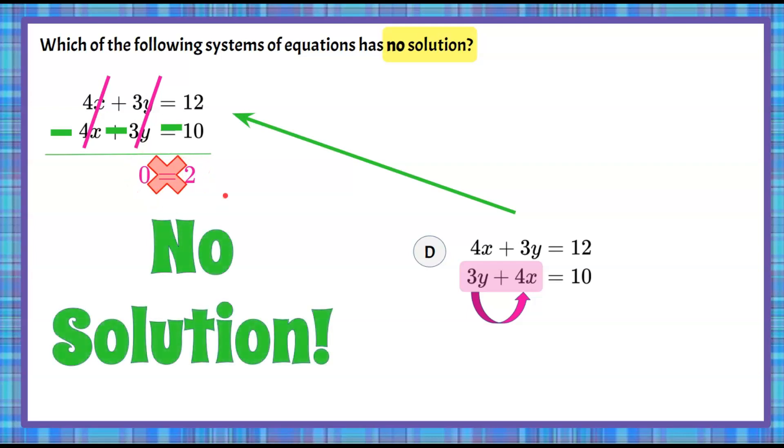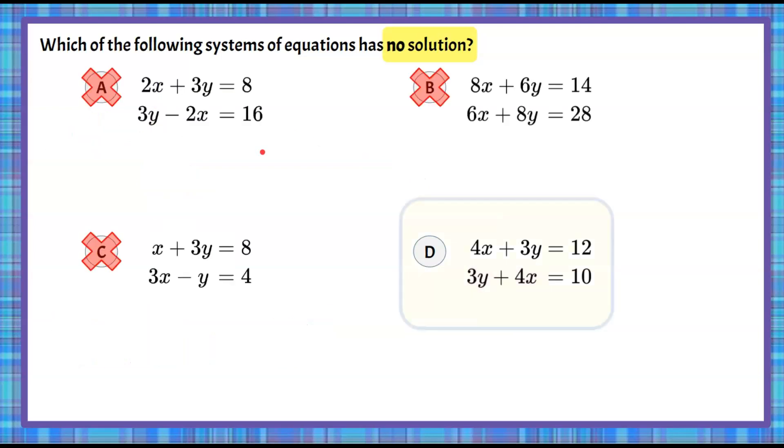That is a false numerical statement, and that's how we know we have no solution. We also can see that they had the same coefficients. So we knew that when we added or subtracted, they were going to be eliminated. So here you have answer choice D is our system with no solution.